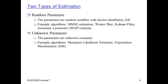There are two types of estimation. One is where the parameters we're trying to estimate are themselves random variables, which implies there's some known distribution about the parameters. For example, we might have some idea that the mean of the Gaussian is within some range or close to a certain value. Example algorithms for this include minimum mean squared error estimation, the Wiener filter, the Kalman filter, and the maximum a posteriori estimate.